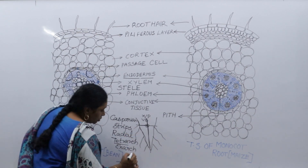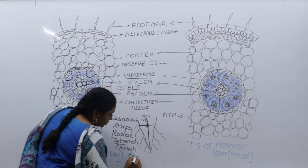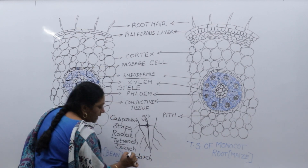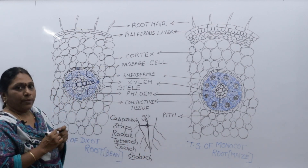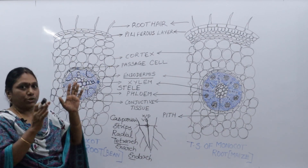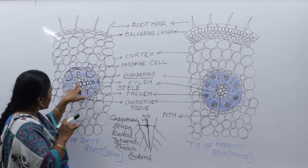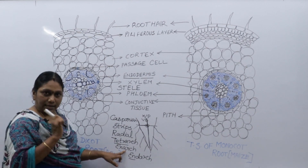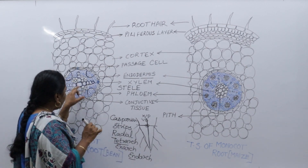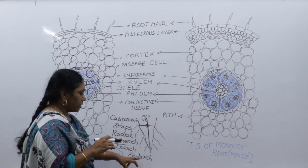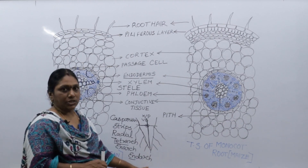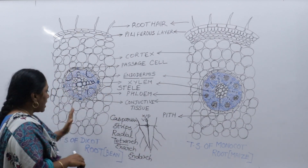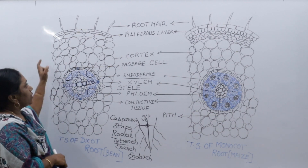There are two types of xylem arrangement: exarch and endarch. In exarch, protoxylem faces the periphery (outside). In endarch, protoxylem faces inside (toward the center). In the root the arrangement is exarch, and in the stem the arrangement is endarch.